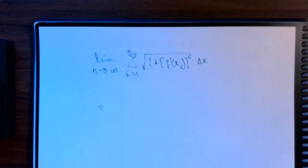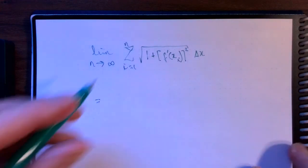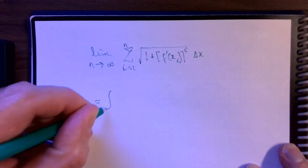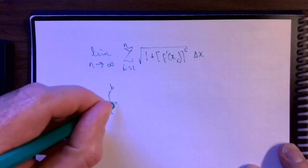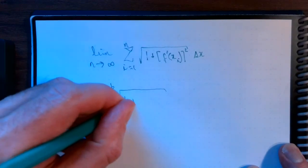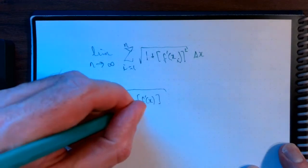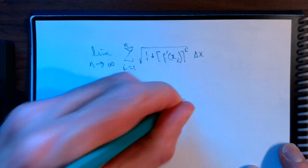f prime squared times delta x. And, since we remember our calculus, this is actually going to turn into an integral. Integral from a to b, I guess I should say. 1 plus f prime of x squared dx.